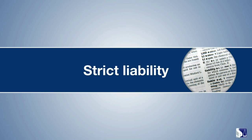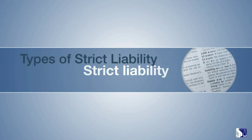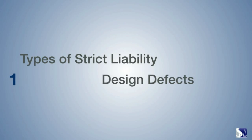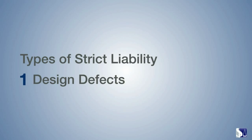Strict product liability cases are grouped into three categories. The first is design defects. Design defects are mistakes or inherent flaws in a product. In most cases, the flaws are built into the product when it's first manufactured, but flaws can also occur during design modifications.